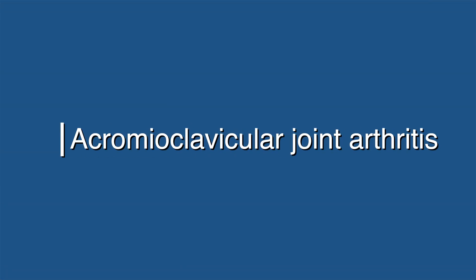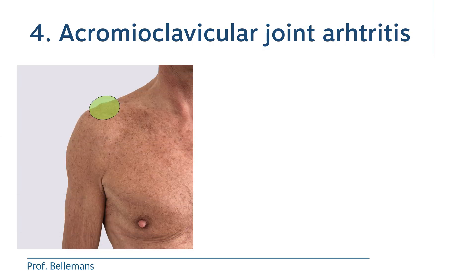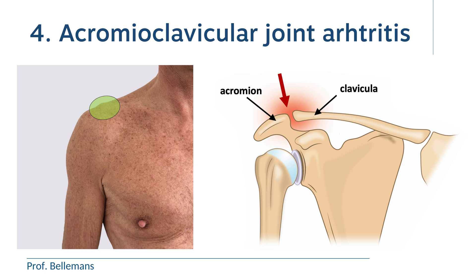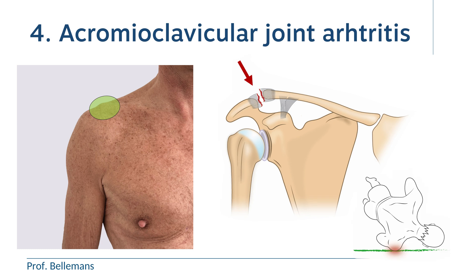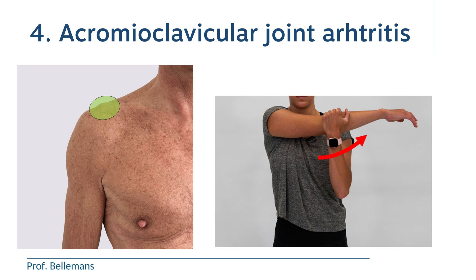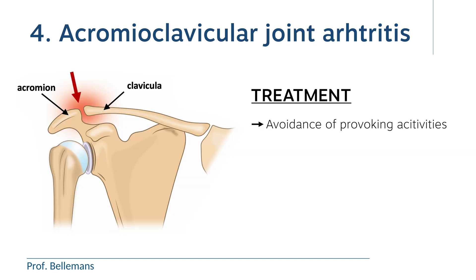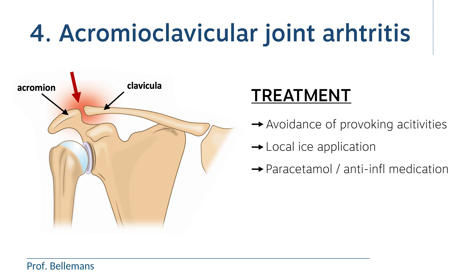Number four: acromioclavicular joint arthritis. In AC joint arthritis, there is inflammation of the small joint between the acromion and the clavicle. This is usually the result of a previous trauma to the AC joint — for example, after a fall on the shoulder — with injury to the AC ligaments. It may also be caused by excessive shoulder use or age-related wear and tear. Often the pain can be provoked by the crossover test, where you bring the elbow to the other shoulder. Treatment consists of temporary avoidance of pain-provoking activities, local ice applications, standard painkillers or anti-inflammatory medication, and sometimes corticosteroid injection into the AC joint. In some rare cases, surgery may be needed.